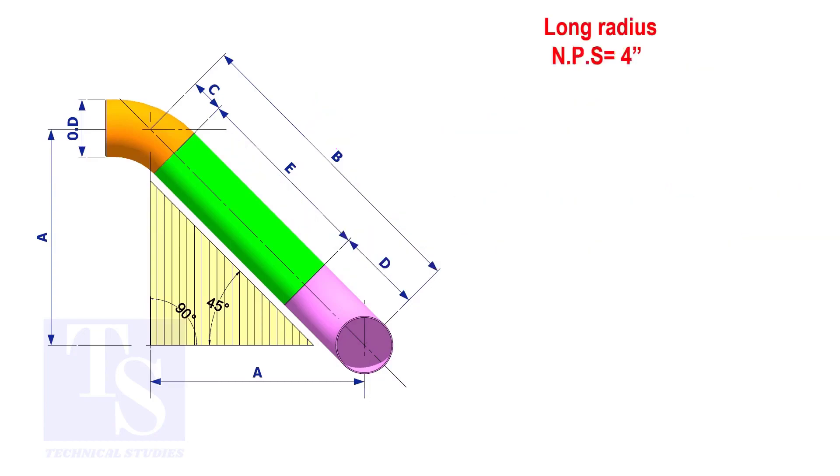Assume that the elbows are long radius. Calculate the true length of the pipe.